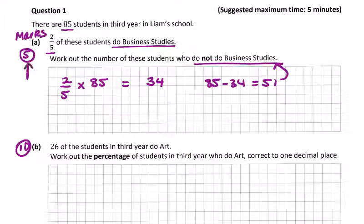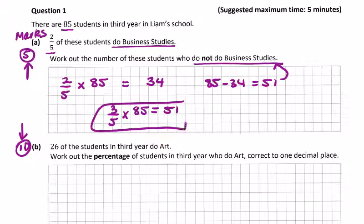You can see the marks available here. I'll put in the margin of these questions. Obviously three fifths of 85 will give 51 as well. I may do it multiple ways in the questions just to show you different ways.